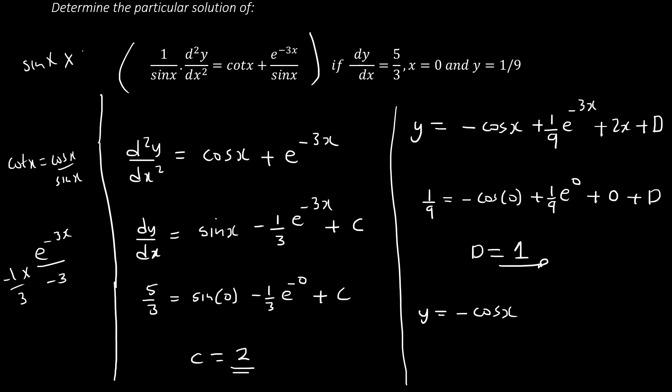Now solve for d: y equals 1 over 9 and x equals 0. Substituting: 1 over 9 equals negative cos(0) plus 1 over 9 e to the 0 plus 2 times 0 plus d. Since 1 over 9 and 1 over 9 cancel, and cos(0) equals 1, we solve for d. Substitute d back into the main equation to get the final particular solution. Use your calculator to avoid mistakes. That is your final answer — I hope this was very helpful. See you next time!